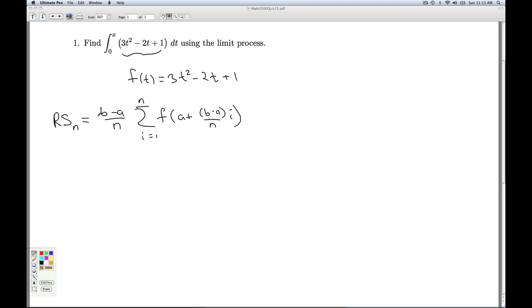So the b minus a over n, that's the width of each of the rectangles because we're using a regular partition. The a plus b minus a over n times i, that's the right-hand point of the i-th sub-interval. So we just plug in what we know. b is the right-hand point of the interval we're looking at, which is the upper limit of integration, which is x. a is the left-hand point of the interval, which is the lower limit of integration, which is 0. So b minus a over n, in this case, is just x divided by n.